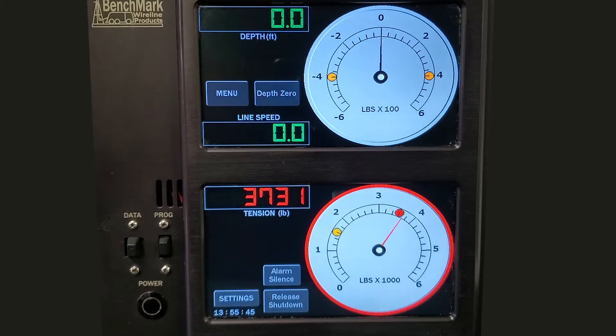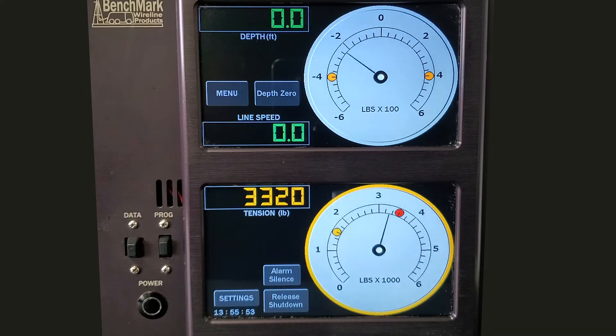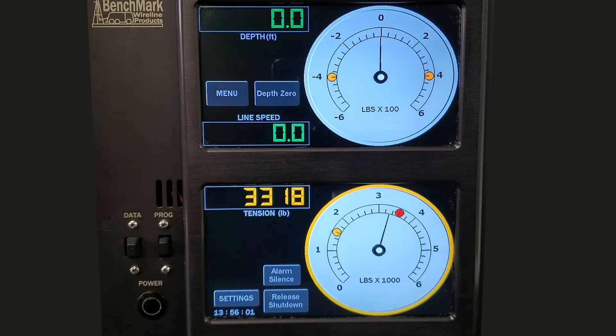Press the Alarm Silence button to stop the audible alarm. To release the shutdown condition, use the joystick to re-engage the winch and manually reduce tension below the shutdown tension limit, which is the red bubble on the tension dial. You can then press the Release Shutdown button.